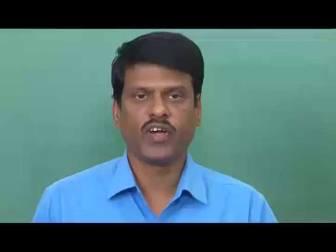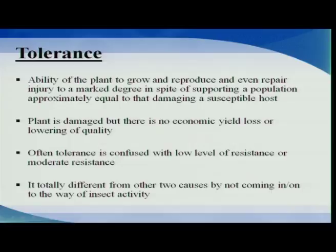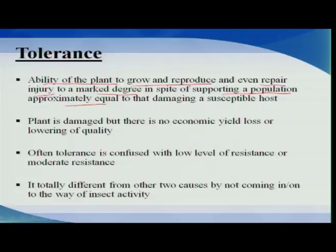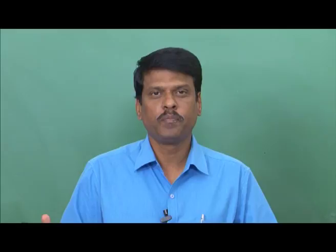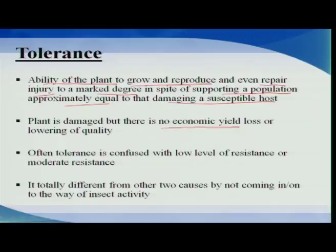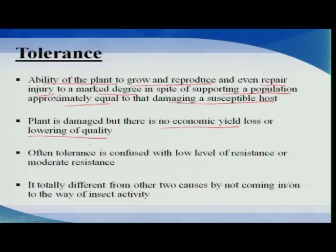Coming to the third mechanism of resistance: tolerance. Tolerance can be best defined as the ability of a plant to grow, reproduce, and even repair injury to a marked degree, in spite of supporting a population approximately equal to that damaging a susceptible host. That means the plant does not show anti-xenosis or antibiosis, but simply supports the pest population to a higher extent, yet is still capable of producing a normal yield with no economic loss or lowering of product quality. Tolerance is sometimes confused with lower-level or moderate resistance, but it is totally different.